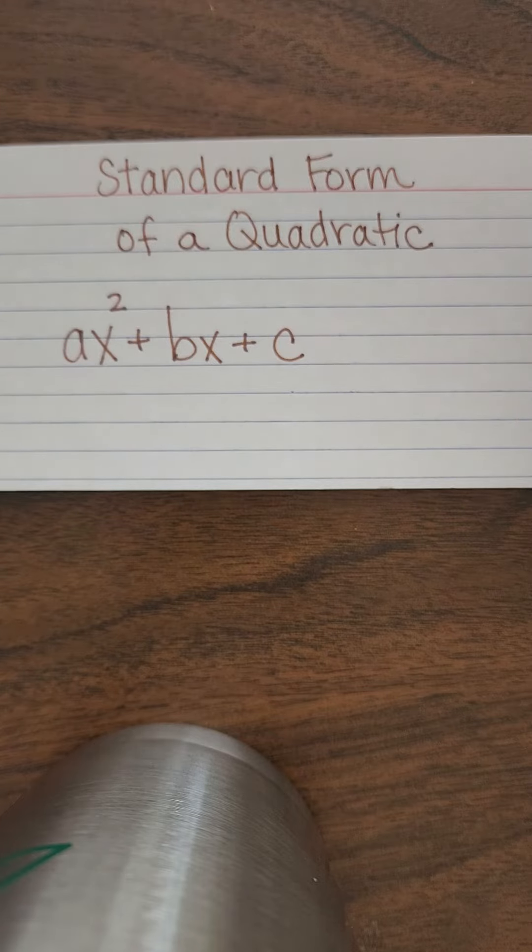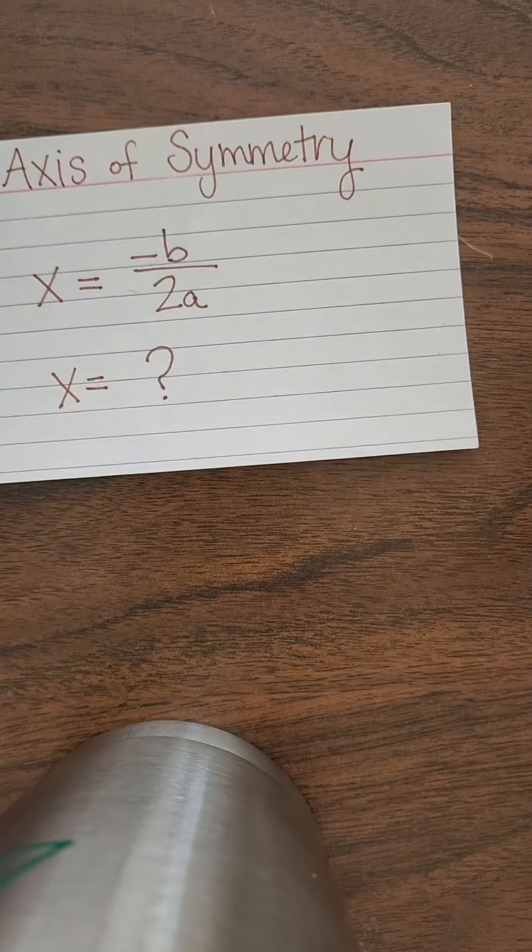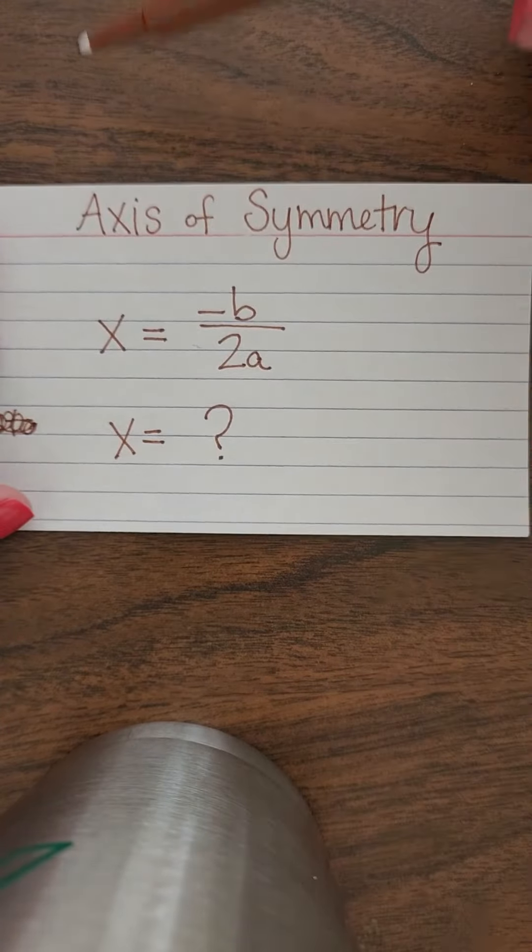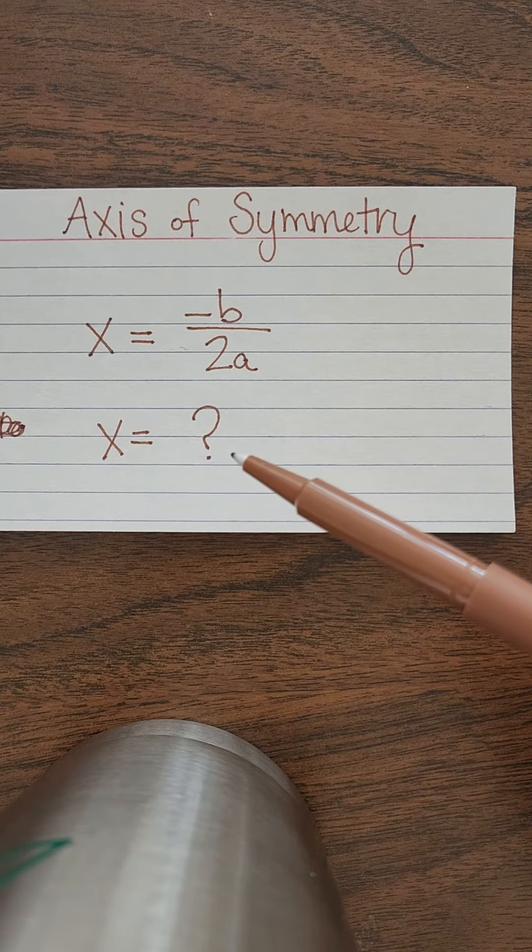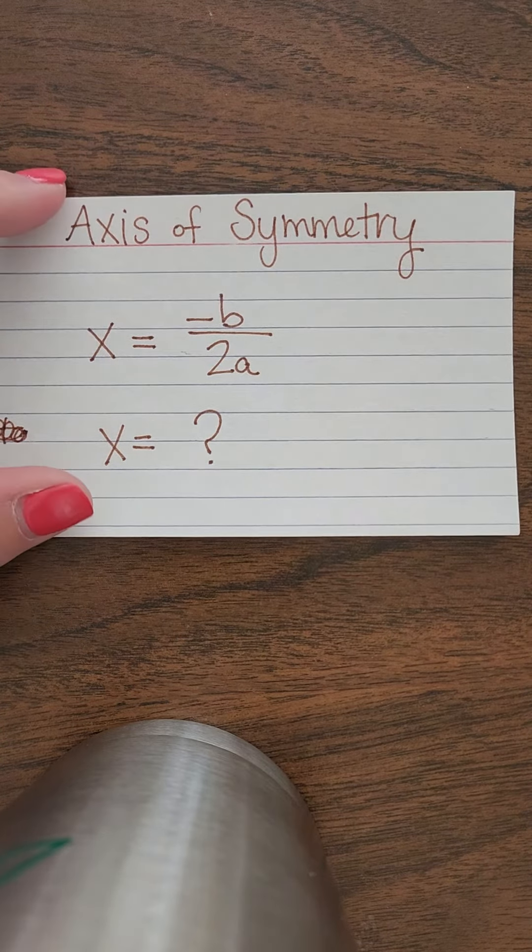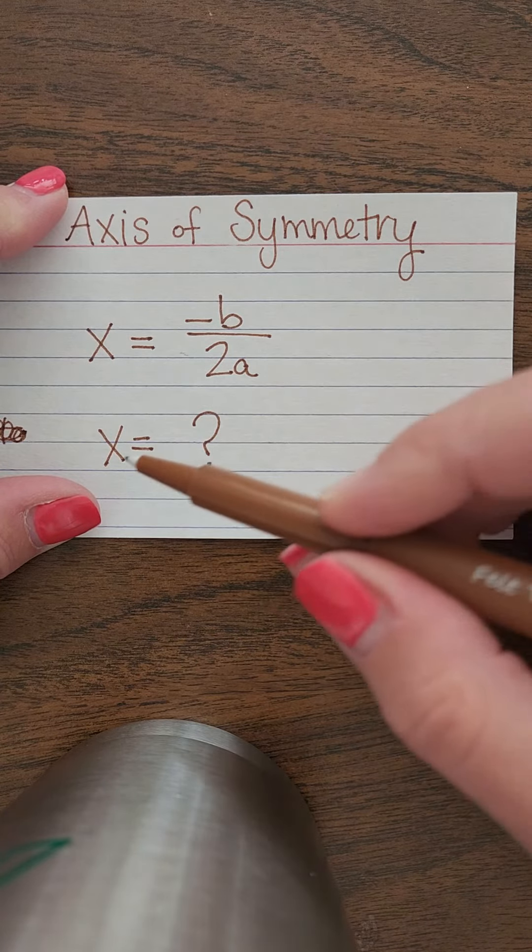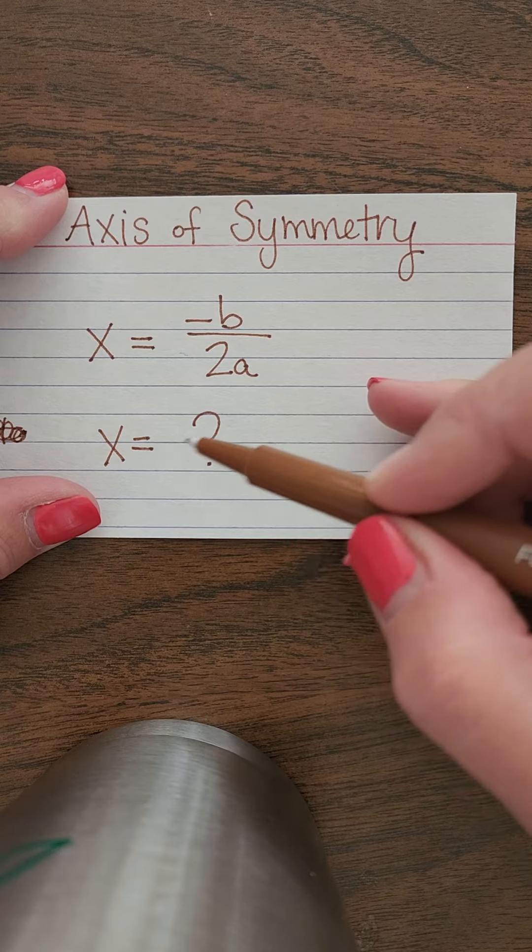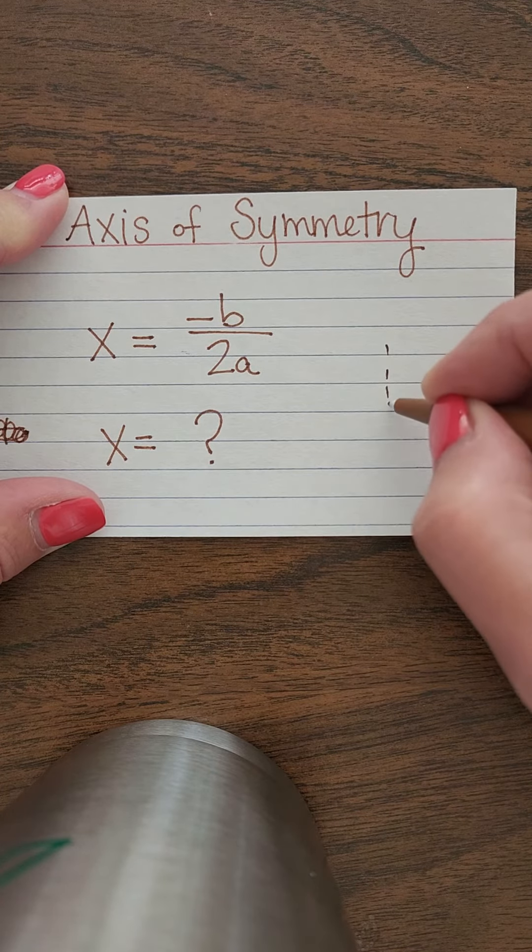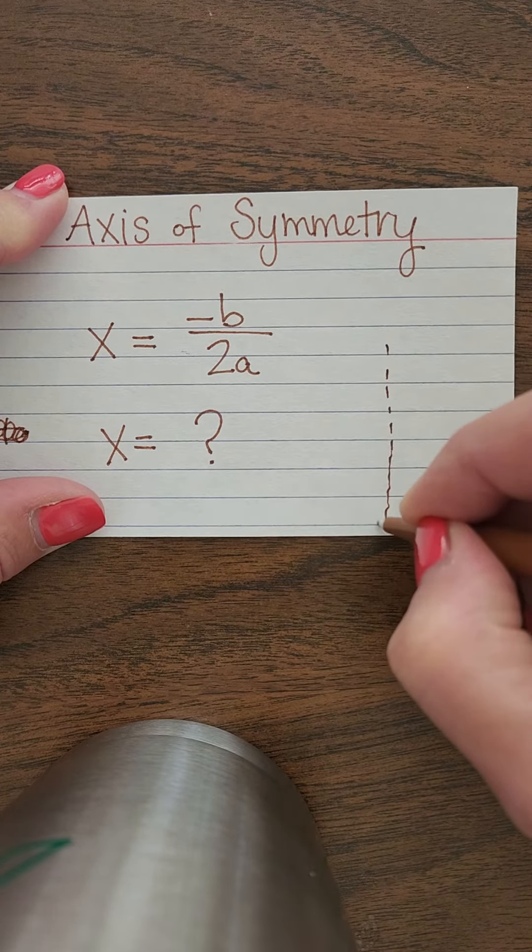All right, your next card is your axis of symmetry card. I want you to make a card that has this formula on it. This will be something that you need to know. X equals negative B over 2A. Then you're going to solve this out, make it in lowest terms, and then you'll have your X. This is usually going to be a vertical line. Sometimes it'll be horizontal, sometimes it can be slant, but for the most part, this X equals is going to end up giving you an axis of symmetry that looks like a vertical line running through your coordinate plane.